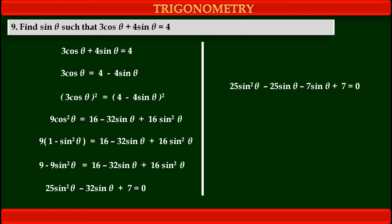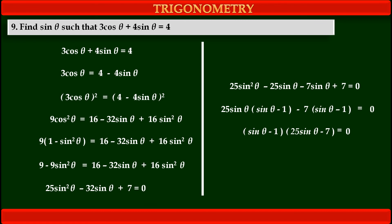Now we take common factors from the first two terms and then the last two terms. From the first two terms we take 25sin theta common, giving the bracket (sin theta minus 1). Similarly, taking minus 7 common from the last two terms gives the bracket (sin theta minus 1) equals 0. Now both terms on the left hand side contain the common factor (sin theta minus 1), so taking that common we get (sin theta minus 1)(25sin theta minus 7) equals 0.